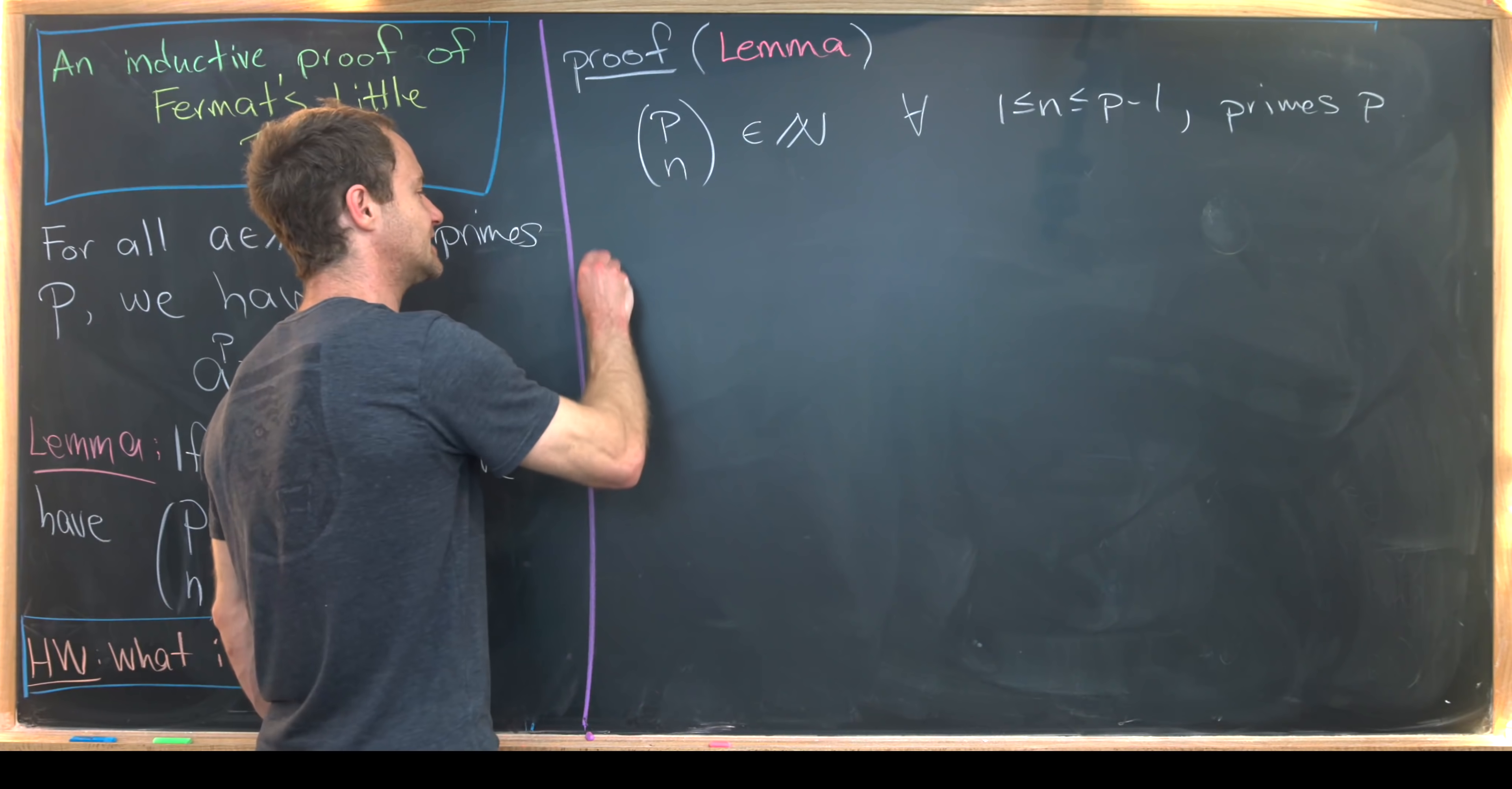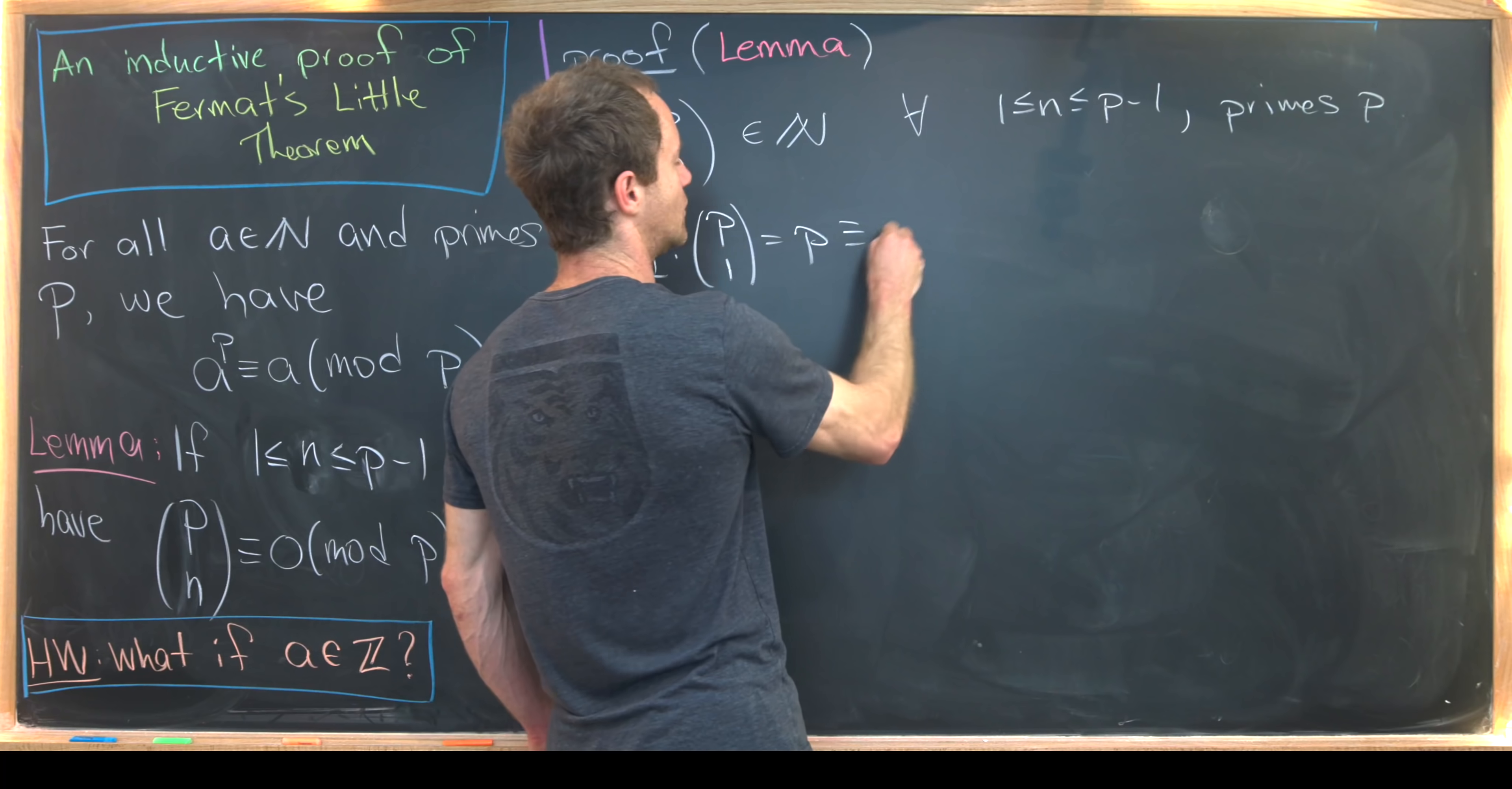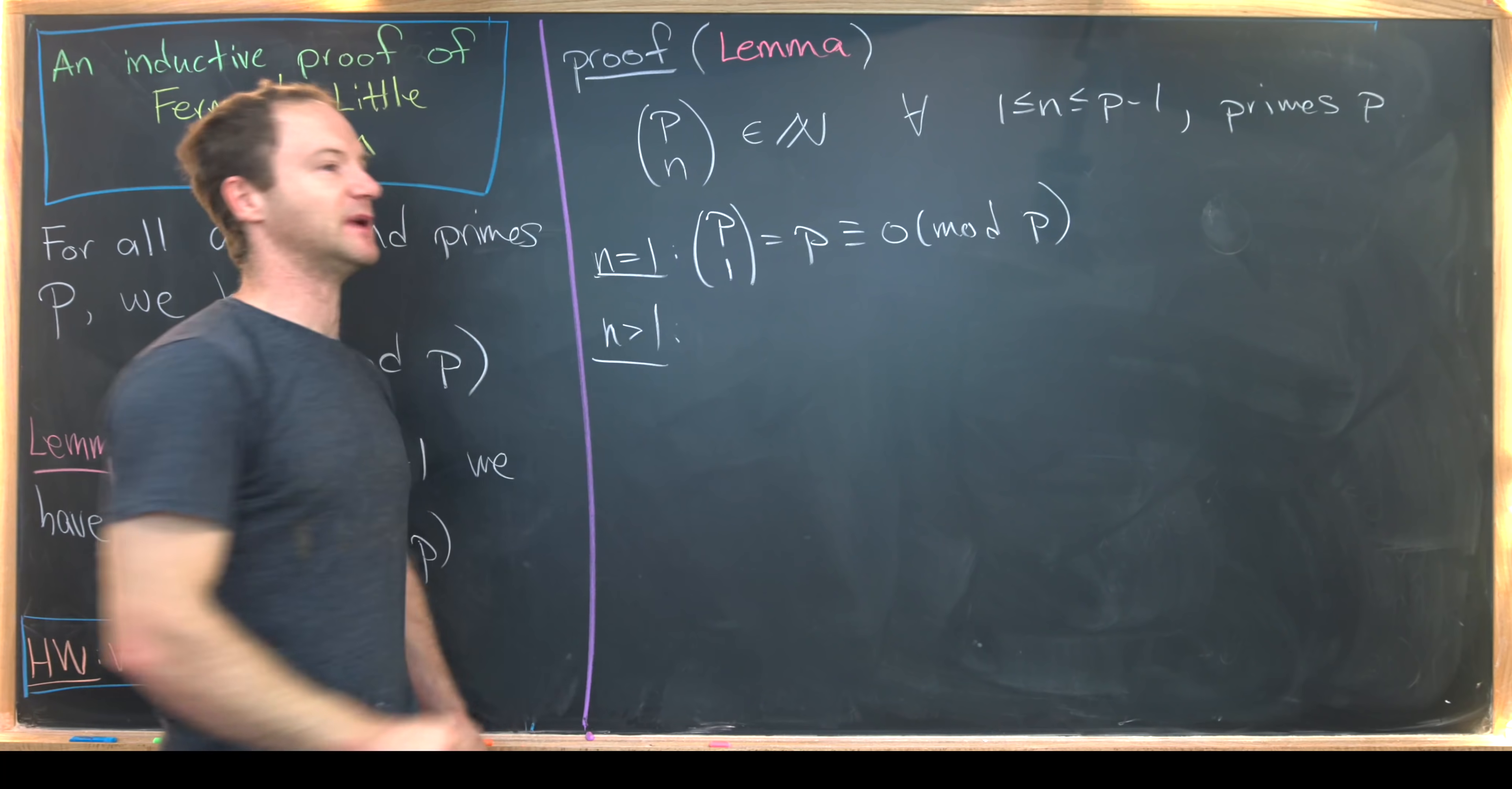Next up, I want to notice the case when N is equal to 1 is easy because P choose 1 is equal to P, which is clearly congruent to 0 mod P. So we'll look at the case when N is bigger than 1.